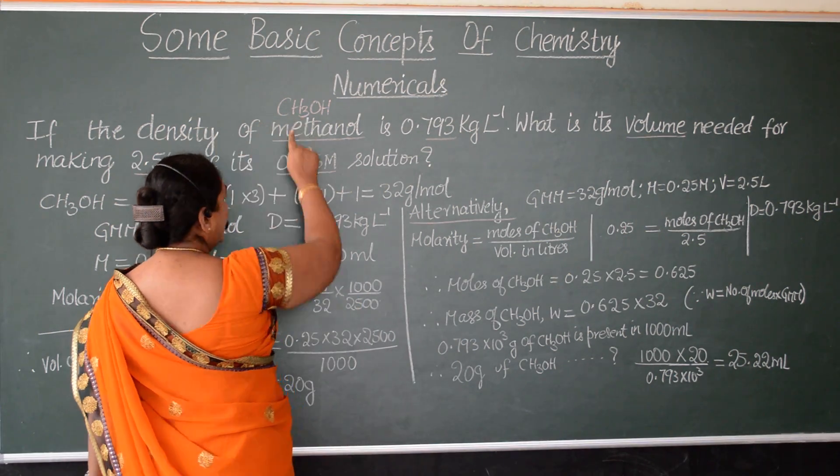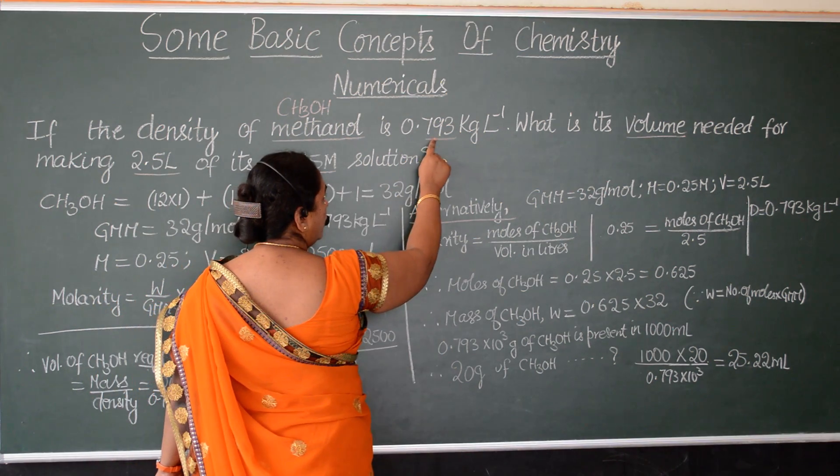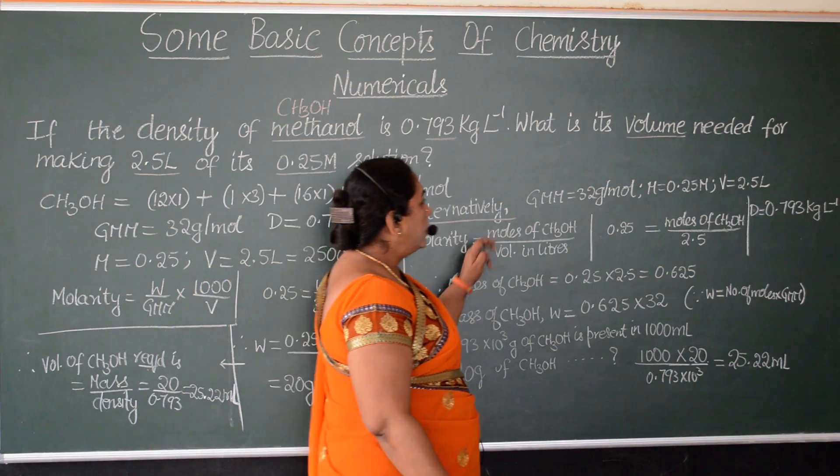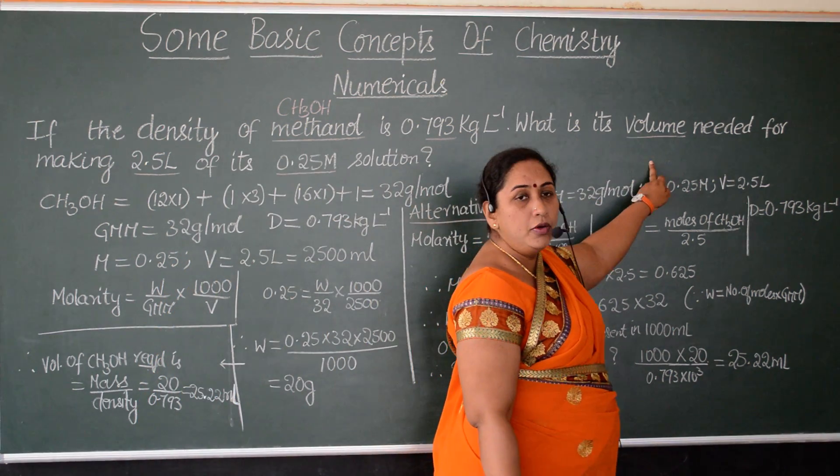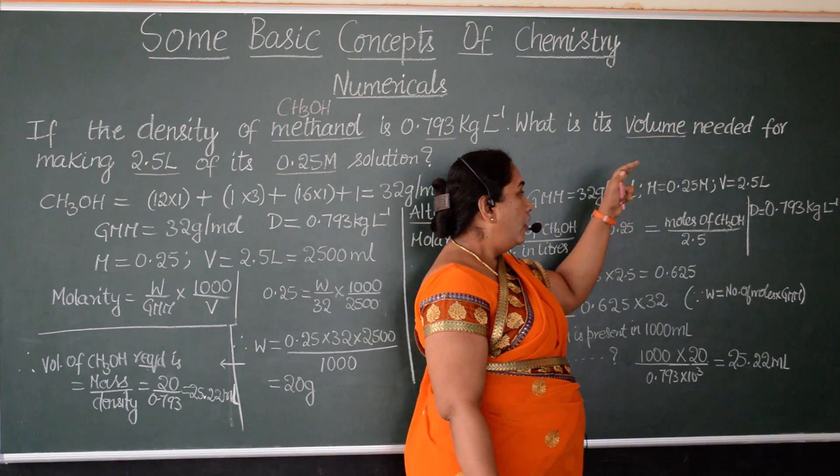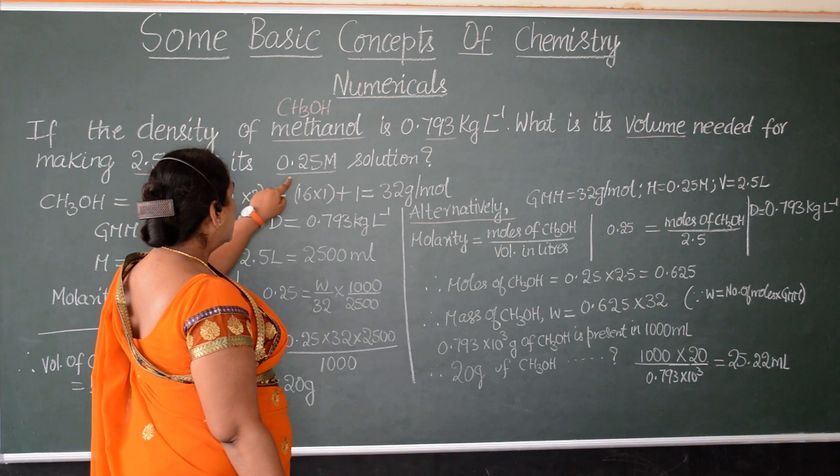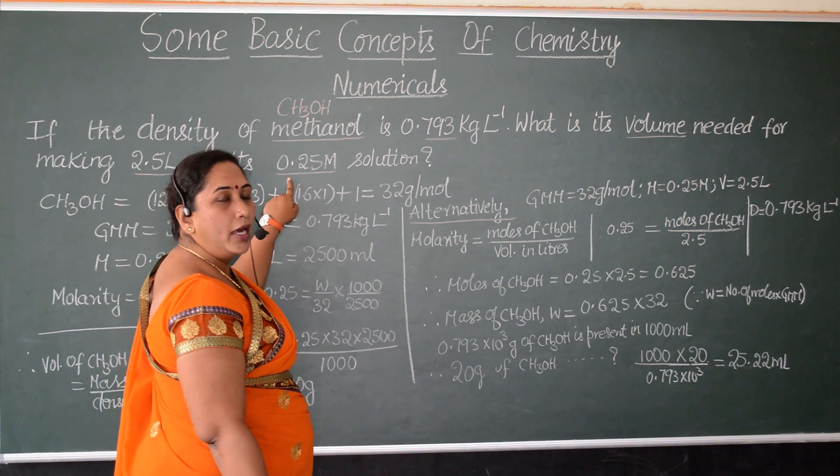The density of methanol is given to us as 0.793 kg per liter. What is that we are supposed to find out? Volume that is needed for making 2.5 liter of the concentration 0.25 molar.